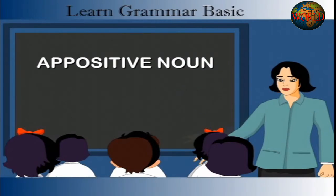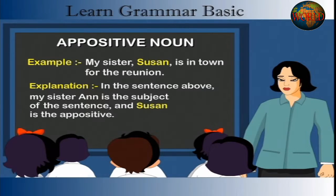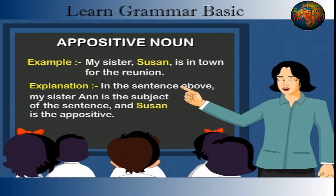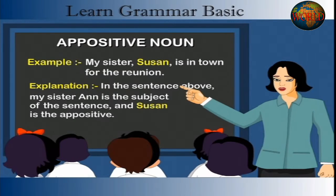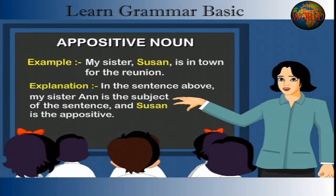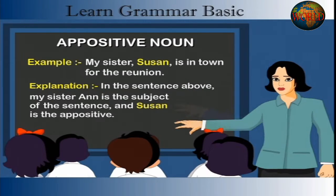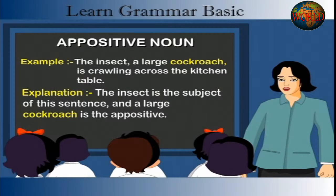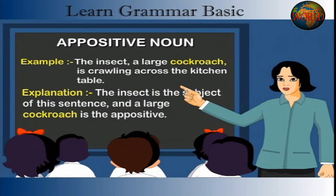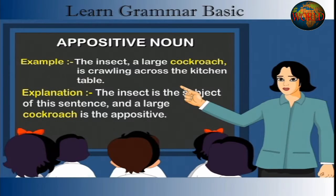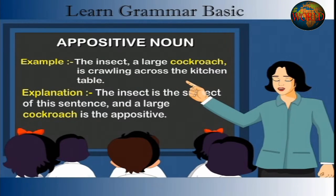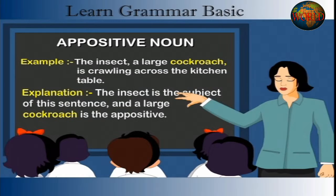Appositive Noun. Example: My sister Susan is in town for the reunion. Explanation: In the sentence above, 'my sister' is the subject of the sentence and 'Susan' is the appositive. Example: The insect, a large cockroach, is crawling across the kitchen table. Explanation: 'The insect' is the subject of the sentence and 'a large cockroach' is the appositive.